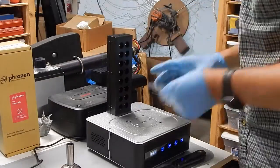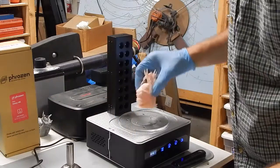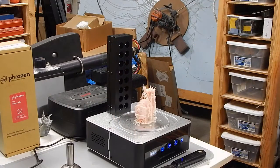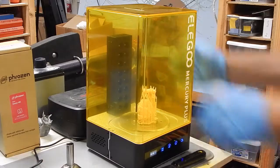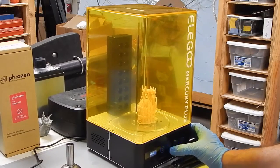When you think the excess uncured resin has been removed, it's time to change the wash and cure station over to the UV curing mode. I cure the model once before removing the supports to stiffen things up.